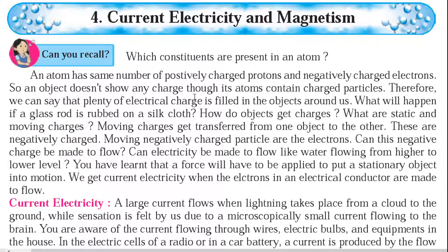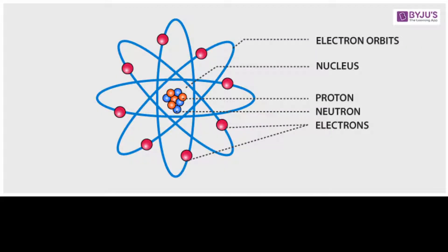Which constituents are present in an atom? Before that, we have to know what an atom is. The smallest particle of all matter is called an atom. Now we have to know what the constituents of atoms are. An atom consists of three particles: proton, neutron, and electron.